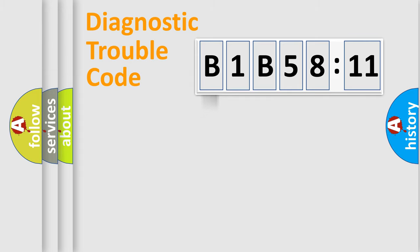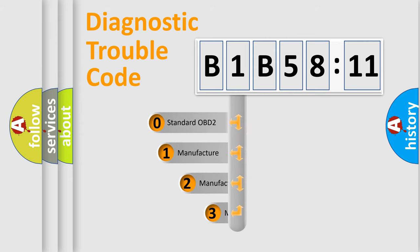Powertrain, body, chassis, network. This distribution is defined in the first character code.